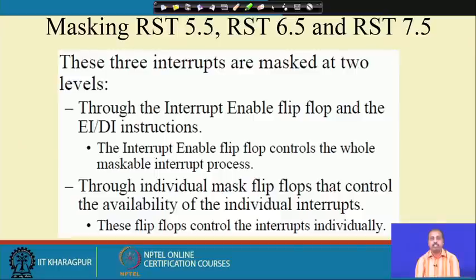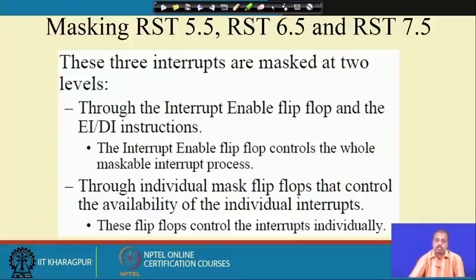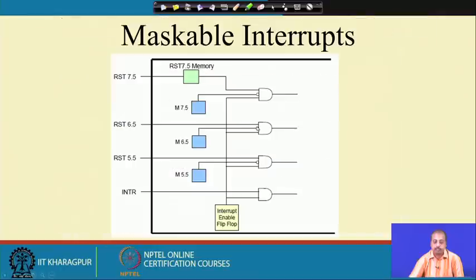The DI instruction will mask off all maskable interrupts, but you may want only, say, 6.5 to be masked while 5.5 and 7.5 remain enabled. To do this, we have to follow another technique: we have to set or reset the interrupts corresponding to individual lines.